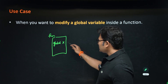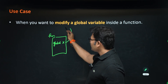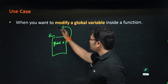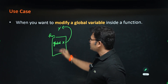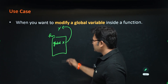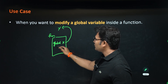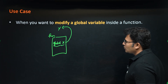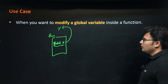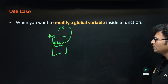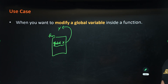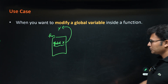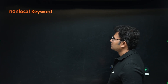Even if x is not defined anywhere outside the function, using the global keyword on x inside a function will make it a global variable. So from within a function you can create global variables without having them defined outside.